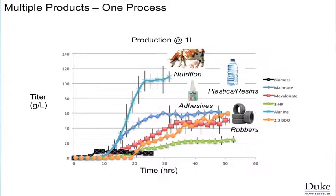Ideally, we have one process for everything. We grow up the biomass to a certain level and then make many different products in fermentation. Anything above a certain level starts to approach commercialization and scale-up for chemicals and fuels. Most of these are in the chemicals range — synthetic or renewable rubbers, plastics and resins, adhesive molecules, amino acids, and nutrition applications.